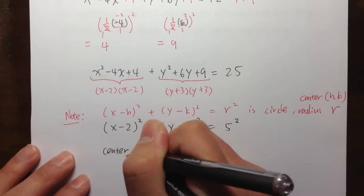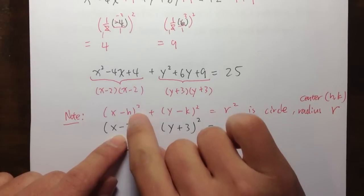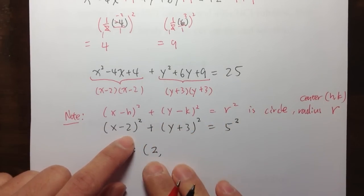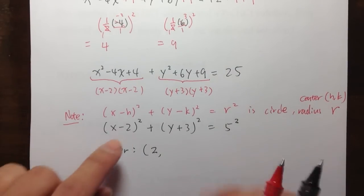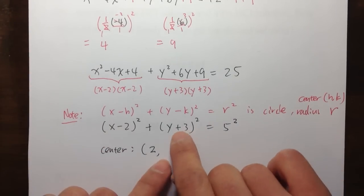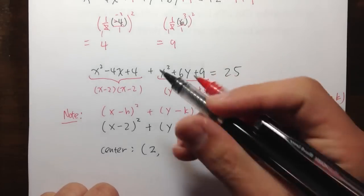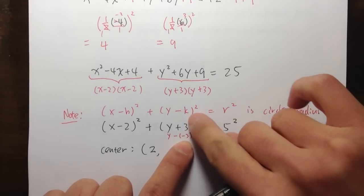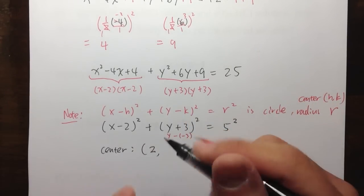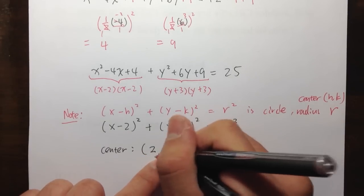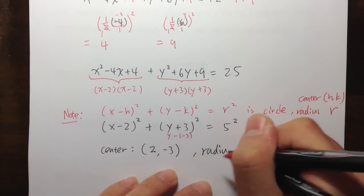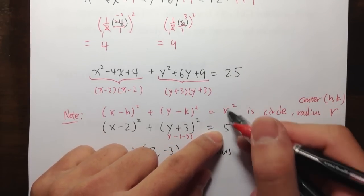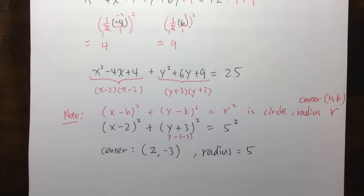With this equation, we know the center by matching h and k. We are subtracting 2 from x, so the center's x-coordinate is positive 2. For y, we have y plus 3, which we read as y minus negative 3, so k is negative 3. The center is at (2, negative 3). The radius is not 25 — we write 25 as 5 squared, so the radius equals 5.